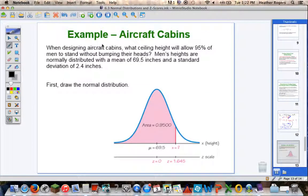Let's look at an example of this. Aircraft cabins. When designing aircraft cabins, what ceiling height will allow 95% of men to stand without bumping their heads? We don't care about 100%. We'll never probably get 100% unless you make an 8 foot tall cabin. But that's not efficient. You want to make your cabin a height that suffices most people, almost all of them, all the usual people, 95%.